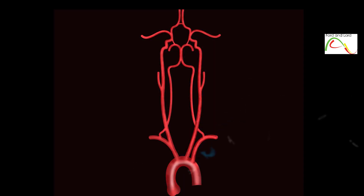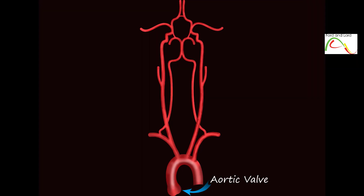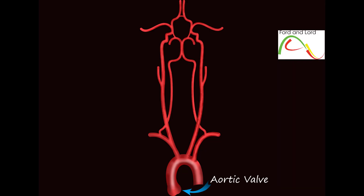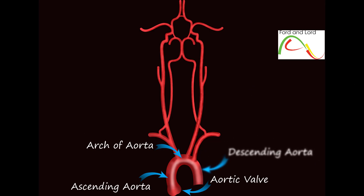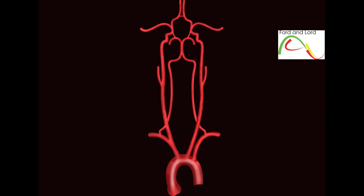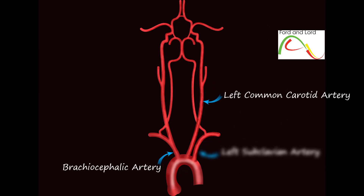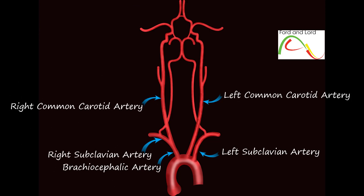Let's start from the aorta, which supplies oxygenated blood to the whole body. In the sketch, you can see the aortic valve, which is located between the left ventricle of the heart and the root of the aorta. Coronary arteries that arise from the root of the aorta are not shown in the sketch. You can see the ascending aorta, arch of aorta, and descending aorta. Three branches arise from the aortic arch: the brachiocephalic trunk, left common carotid artery, and left subclavian artery. These branches supply blood to the upper body, arms, head, and neck. The brachiocephalic artery divides further into the right common carotid and right subclavian arteries.